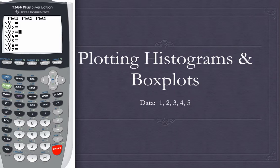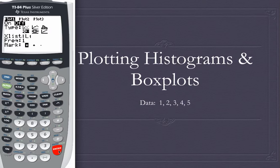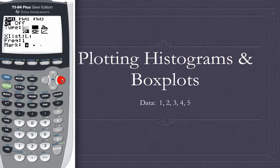Let's go back to stat plot, second stat plot, and go to the first plot to turn it on and do a histogram. It's off right now, but the on key is highlighted, so all we need to do to turn it on is press enter once that key is highlighted. For type, we're going to use our cursor keys to highlight the histogram type, and once it's highlighted, press enter to select that type permanently.